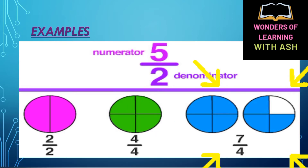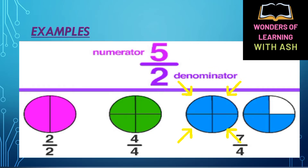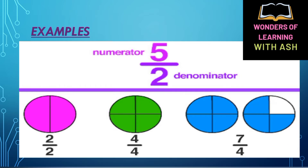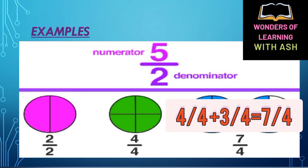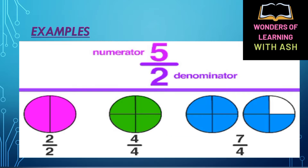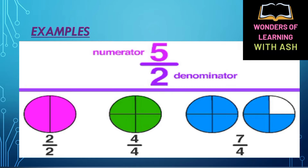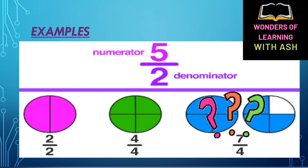Now look at these blue circles. One whole circle is divided into 4 parts, and the other circle is also divided into 4 parts. In the first circle all the parts are shaded, so this is one whole. The second circle is three-fourths shaded. Each circle is divided into 4 parts, so the denominator is 4.